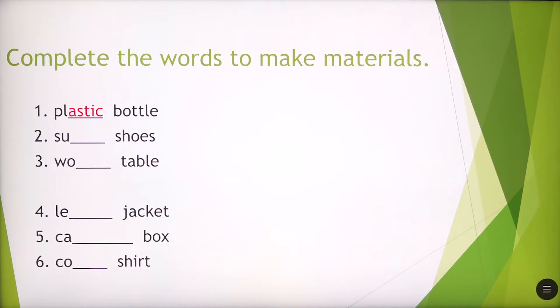Number two, SU. It's suede shoes. Number three, it starts with W-O. What kind of letters would you add here to complete the word? Wooden table. It's wooden.